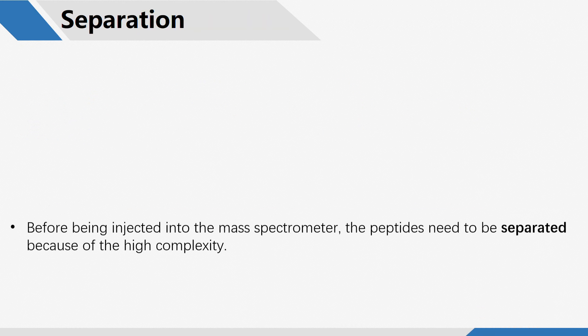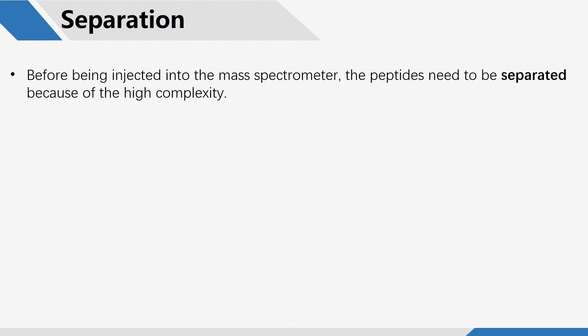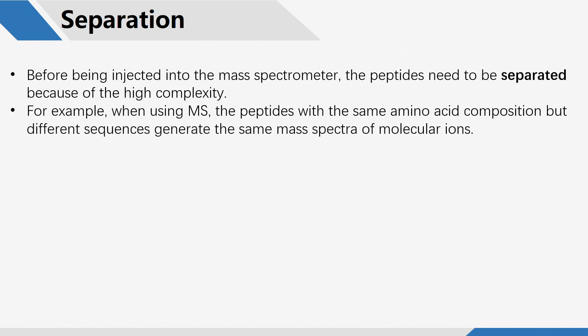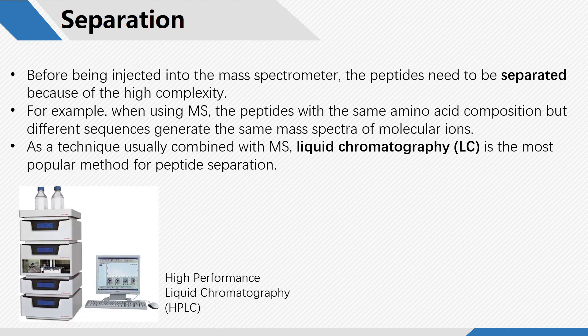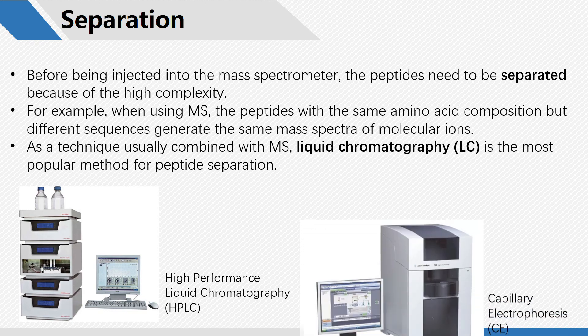Before being injected into the mass spectrometer, the peptides need to be separated because of their high complexity. For example, when using mass spectrometry, peptides with the same amino acid composition but different sequences generate the same mass spectra of molecular ions. As a technique usually combined with mass spectrometry, liquid chromatography is the most popular method for peptide separation, and high-performance liquid chromatography has been widely used for bioactive peptide profiling. In addition, there are several other methods including multidimensional separation technology and capillary electrophoresis.